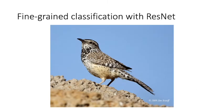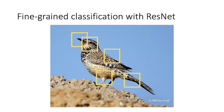To differentiate between bird species that are hard to distinguish, we focus on fine-grained classification, which is especially good at identifying objects that are visually similar by extracting details.